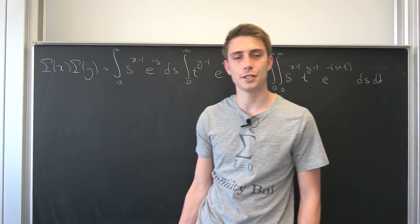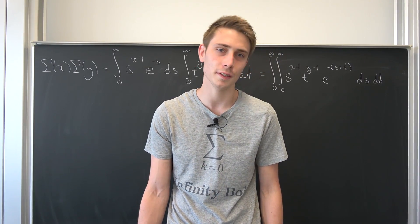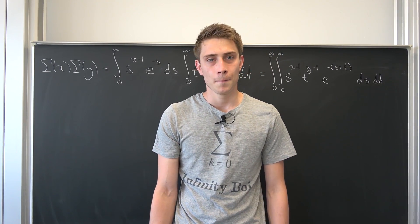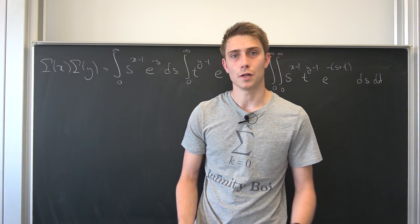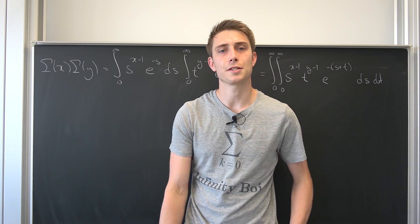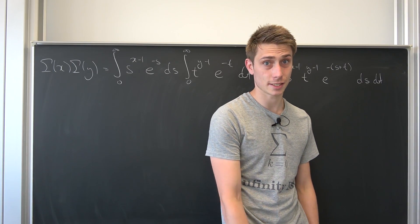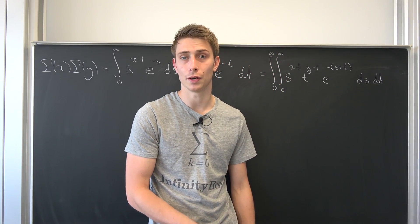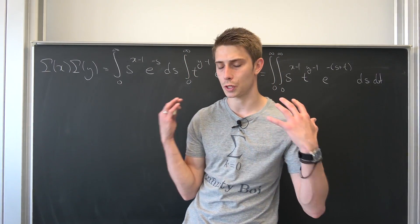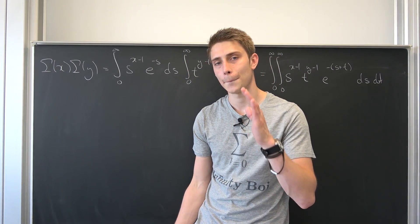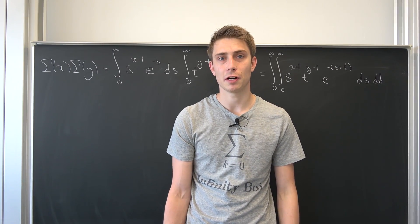Morning fellow mathematicians, welcome back to another video. In a previous video we found an integral representation for our Beta function. In this video there is going to be another one — a really nice one, an extremely useful one, that makes extensive use of trigonometric functions, the sine and the cosine. And we are going to derive this form today.